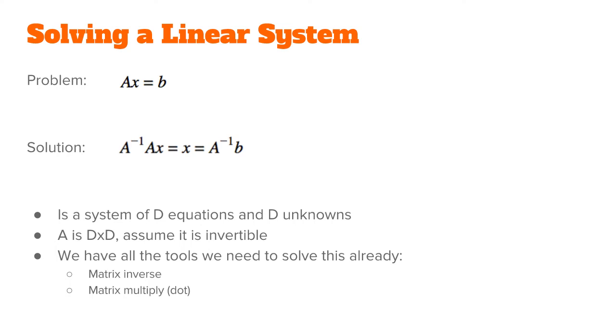Recall that the form of a linear system is ax equals b, where a is a matrix, x is a column vector of values we're trying to solve for, and b is a vector of numbers.